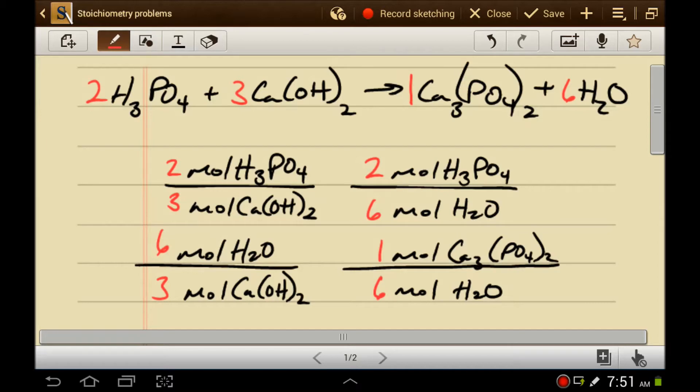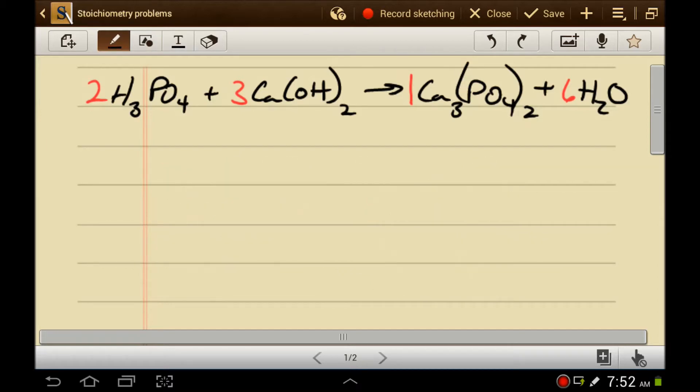That's stoichiometry right there. That's all there is to it. So what would this look like as a problem? Let's say that you had 0.56 moles of phosphoric acid, and you wanted to know how many moles of calcium hydroxide you would need to use. You would say 0.56 moles of H3PO4,